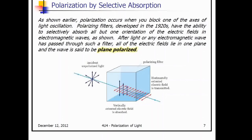Polarization occurs when you block one of the axes of light oscillation. Polarizing filters developed in the 1920s have the ability to selectively absorb all but one orientation of the electric fields in electromagnetic waves. After light passes through a filter, all of the electric fields lie in one plane, and the wave is said to be plane polarized. So our incident randomly polarized light enters a filter that blocks all of the electric field waves that are not horizontal, and what we end up with is horizontally oriented electric fields — our polarized light.